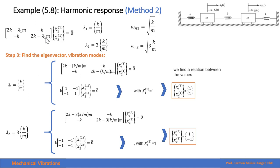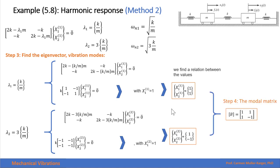We do the same for the second eigenvalue — introducing it into our matrix to find the second set of amplitudes. Setting the first amplitude to 1, we find the second is negative 1, meaning both masses move in opposite directions with the same magnitude. When we have found both modes of vibration, we proceed to the next step: constructing the modal matrix, whose columns represent the modes of vibration or eigenvectors.